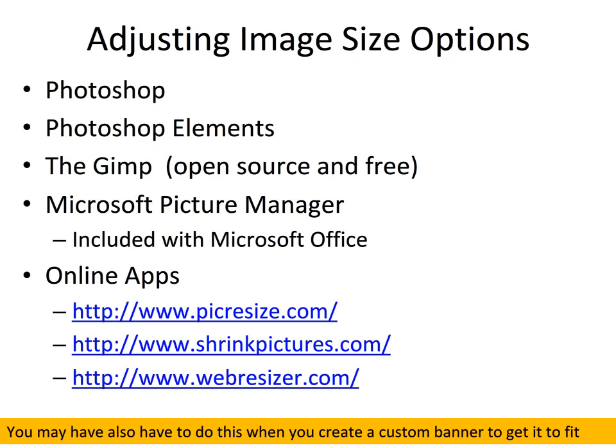If your source file images are not the same size, you may want to adjust the size. If you use Photoshop or Photoshop Elements, it can be done in there. The GIMP, which is open source for Windows, Mac, and Linux, can do it — in fact, the GIMP can make pictures that are different aspect ratios without having to preserve them. Microsoft Picture Manager that comes with Office will adjust sizes, but it preserves the aspect ratio, so it's hard sometimes to get things exact. Or there's an online app for that.